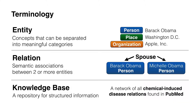Let's discuss a little terminology that I'll talk about throughout the day. This is common lingo in information extraction. First is the concept of an entity, which is simply any concept that can be separated into meaningful categories for text. These are intuitive concepts like a person's name, or a geographic place, or a company name.